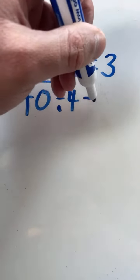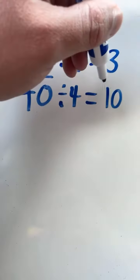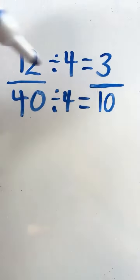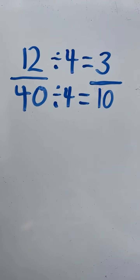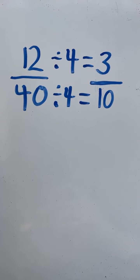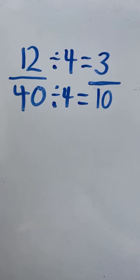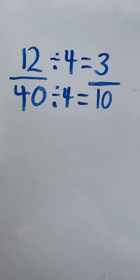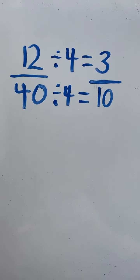And 40 divided by 4 equals 10. And we have our final answer. 12 fortieths reduced to lowest terms equals 3 tenths.